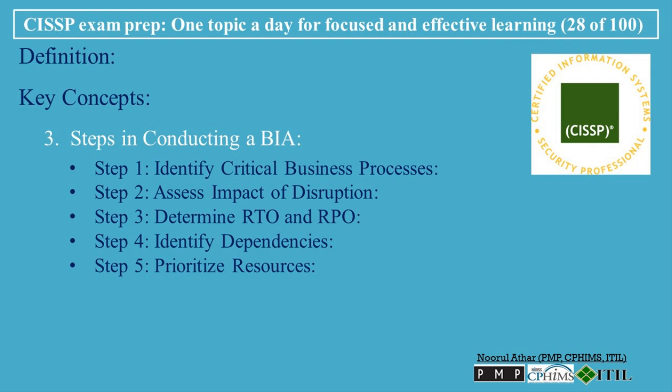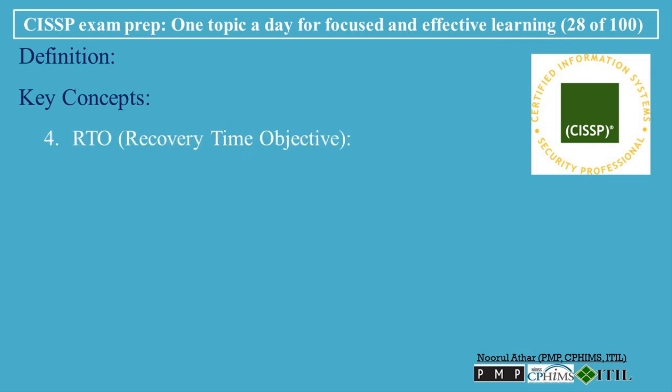Step 5 — Prioritize Resources: Based on the criticality of business functions and their RTO/RPO, allocate resources to ensure that the most critical processes are prioritized for recovery in a disaster or disruption. RTO (Recovery Time Objective) is the maximum amount of time a business function can be unavailable before causing significant harm. Example: an e-commerce company might have an RTO of 2 hours for its payment processing system, meaning that system must be back online within 2 hours of disruption to avoid serious financial losses.